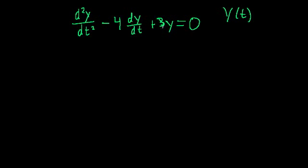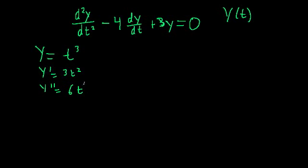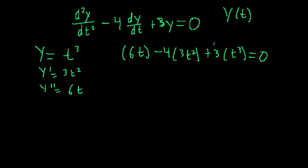So this function y cancels out with its derivatives. That's a fairly rare property — you don't see it with most functions, especially not polynomials. For example, if y equals t cubed, then the first derivative is 3t squared and the second derivative is 6t. Plugging in, we get 6t minus 4 times 3t squared plus 3 times t cubed equals 0, and these values don't cancel each other for all values of t.